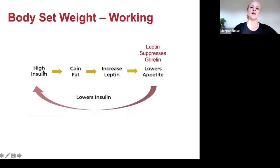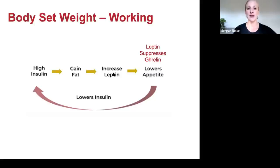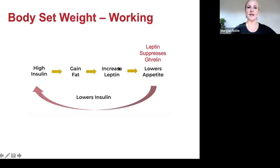When we eat, especially carbohydrates, our insulin goes up. We gain fat because insulin is your fat creation and storage hormone. When you gain fat you release more leptin — that fat sensing hormone tells your brain how much body fat you have. Leptin suppresses ghrelin, so you'll have a lower appetite and eat less. When you eat less, that helps lower your insulin. That's the negative feedback loop when it's working correctly.